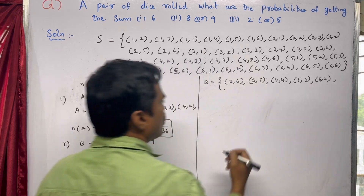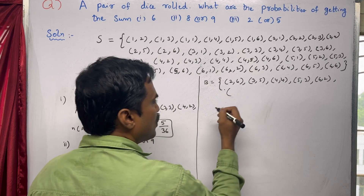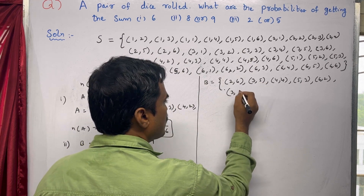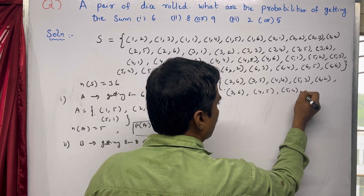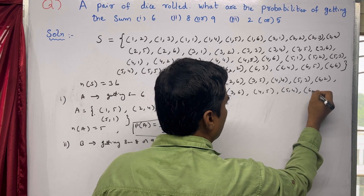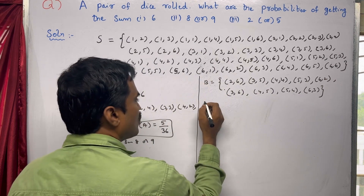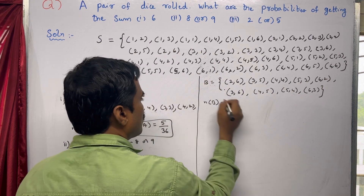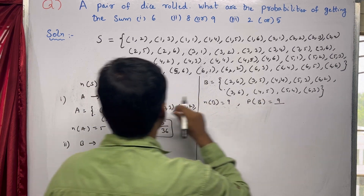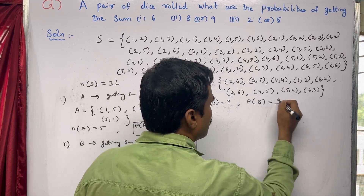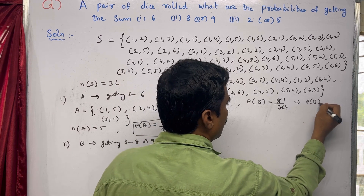For sum 9: (3,6), (4,5), (5,4), (6,3) — that is four outcomes. So totally n of B equals nine. Therefore probability of B is 9 by 36, and since 9 cancels with 36, we get P of B equal to 1 by 4.